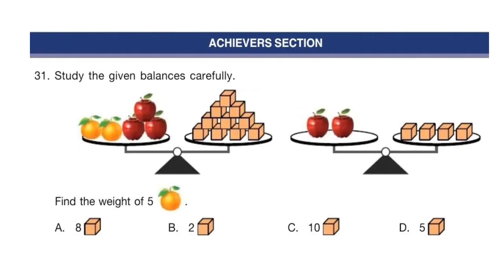Next section is the Achievers section. Each question carries 2 marks. Question 31. Study the given balances carefully. Find the weight of 5 oranges. You can pause the video and calculate your answer. The correct answer is option C: 10 blocks.